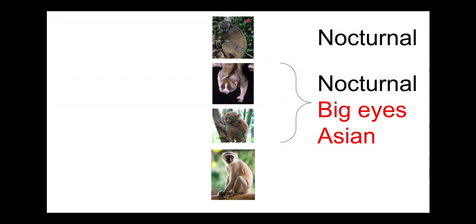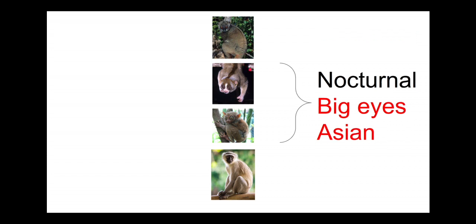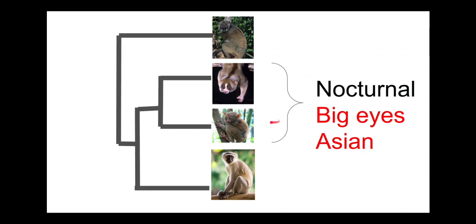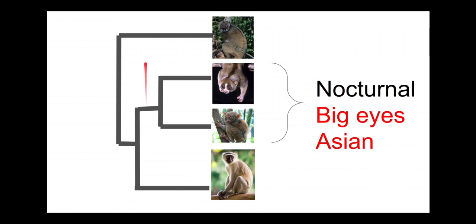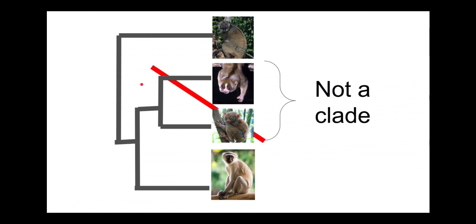Lemurs tend to be nocturnal but don't have as large eyes, and they're in Madagascar rather than Asia. So it's tempting to group tarsiers and lorises together and put them on a phylogenetic tree as more closely related to each other than to lemurs, and perhaps linked more closely toward lemurs on the tree.